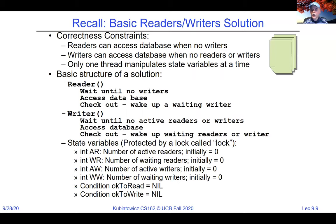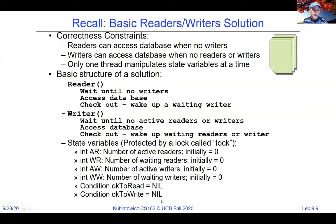The state variables are four integers and two condition variables. The integers track: active readers (AR — readers actually in the database), waiting readers (WR — readers ready to go but blocked), active writers (AW — the maximum is one), and waiting writers (WW). The two condition variables are for sleeping depending on whether we're a reader or a writer.